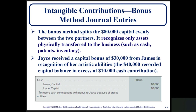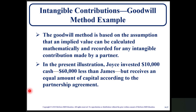Using the bonus method: the bonus method splits the $80,000 capital evenly between the two partners. It recognizes only assets physically transferred to the business, such as cash. Joyce receives a capital bonus of $30,000 from James in recognition of her artistic abilities — her $40,000 recorded capital balance exceeds the $10,000 she contributed. The journal entry records a debit to cash for $80,000, with credits to James's and Joyce's capital accounts for $40,000 each, to record cash contributions with a bonus to Joyce because of her artistic abilities.